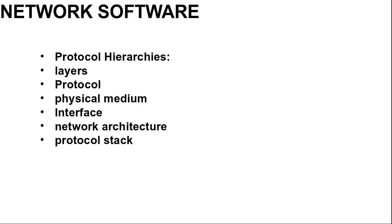Network software is currently highly structured. To reduce design complexity, most networks are organized as a stack of layers or levels, each one built upon the one below it. The number, name, content, and function of each layer differ from network to network. The purpose of each layer is to offer certain services to the higher layers, while shielding those layers from the details of how those services are actually implemented. In a sense, each layer is a kind of virtual machine offering certain services to the layer above it.